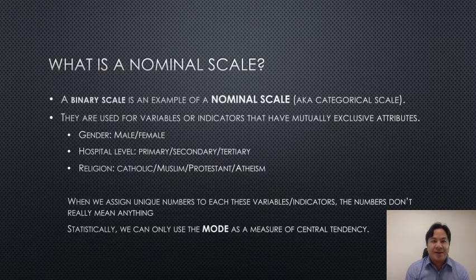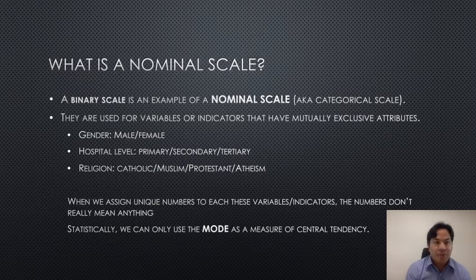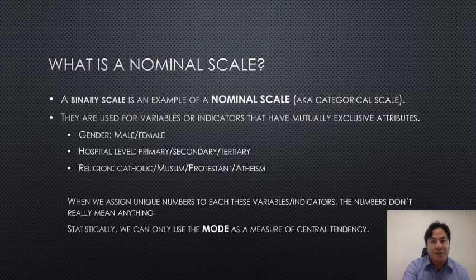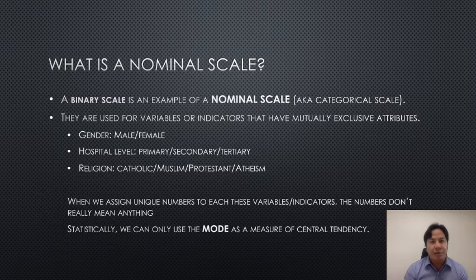A binary scale is an example of a nominal scale, and these nominal scales are used for variables or indicators that have mutually exclusive attributes. For example, you can have gender — the choices are male or female. Another example would be hospital level, which could be primary, secondary, or tertiary. Another would be religion, which can have two, three, four, or more types of choices. But when we assign a unique number to each of these variables, the number does not really mean anything. So statistically, we can only use the mode as a measure of central tendency in nominal scales.